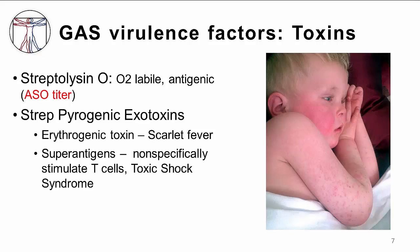Another type of toxin that strep produces is the pyrogenic exotoxin, which is linked to several clinical manifestations of streptococcal disease. One of the exotoxins, previously known as erythrogenic toxin, was so named for its association with scarlet fever, a reaction which occurs when these toxins have disseminated in the blood. Some strains of group A strep produce pyrogenic exotoxins that act as superantigens — that is, they are capable of nonspecific mass activation of T cells. This can lead to an overwhelming inflammatory response known as strep toxic shock syndrome, resulting in circulatory collapse and death. Strep toxic shock syndrome typically occurs in conjunction with group A strep suppurative infections, which we will discuss now.